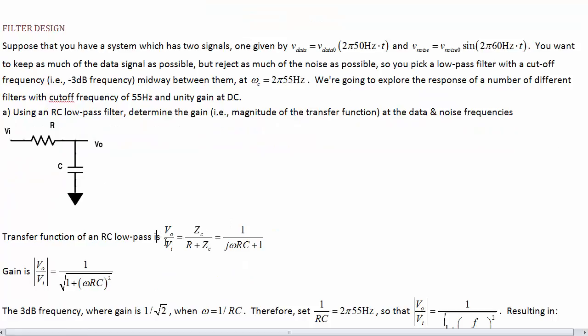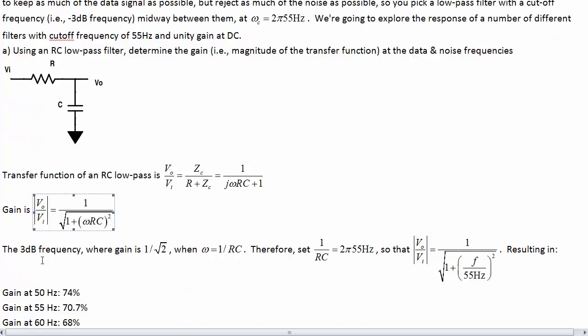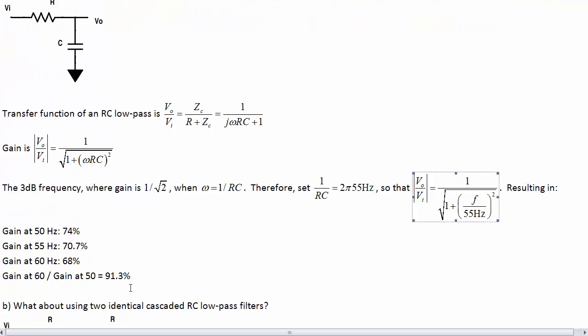So first let's just use an RC low-pass filter. And the transfer function we know is 1 over j omega RC plus 1 or you can re-derive that if you like. The gain would be the absolute value of this. So the 3 dB frequency where the gain is 1 over root 2 lets us solve for what RC needs to be. Substituting all of that in, we come up with our frequency response of this filter as follows. Just looking at the gain, not necessarily the phase.